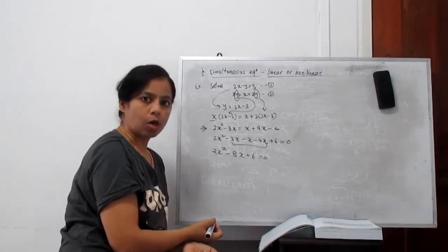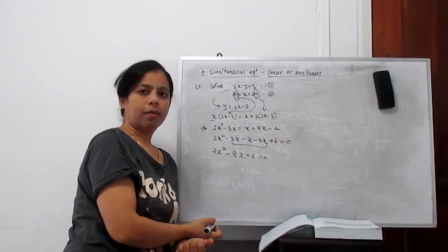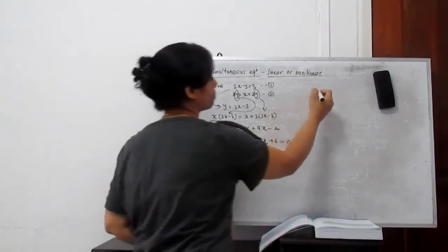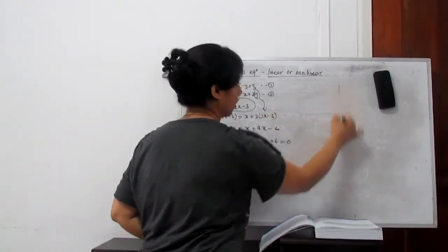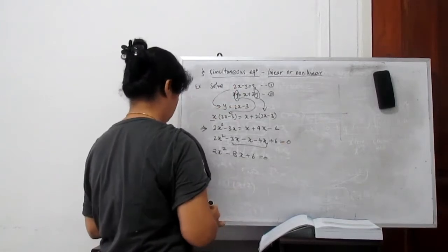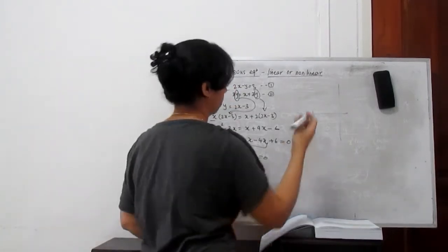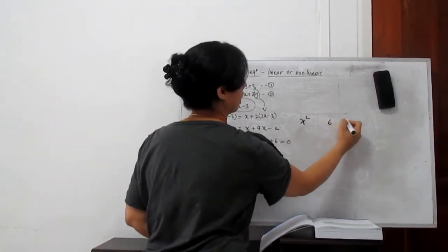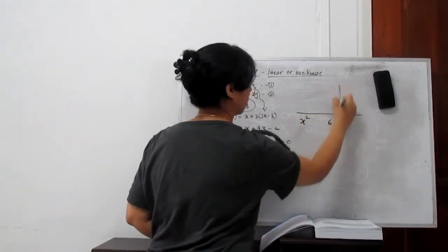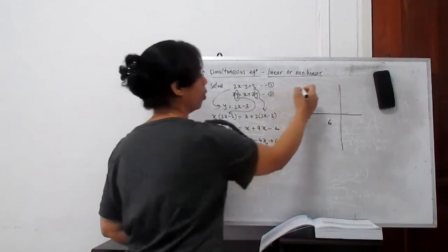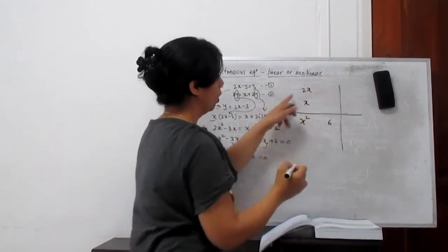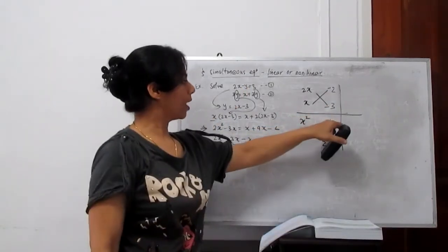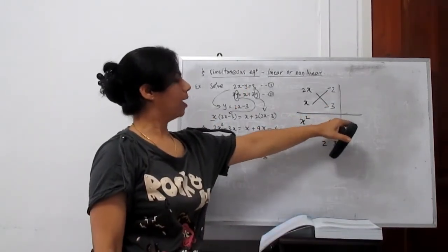Now you need to use cross method or another method to find the roots of this equation. We learned already, you need to make x squared term, constant term is 6, and this is the x term. So x squared term is 2x. I put 2x upon x. 2 times x is x squared.